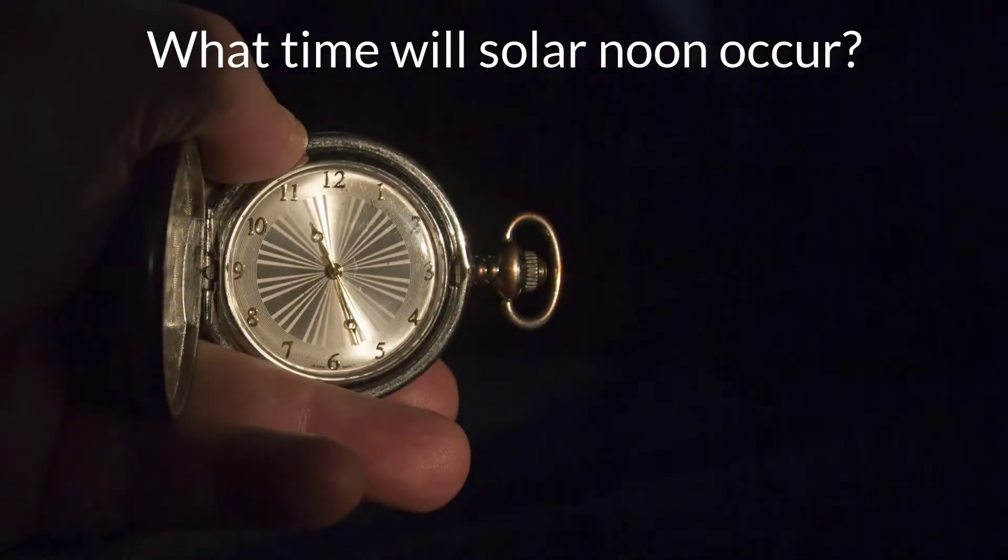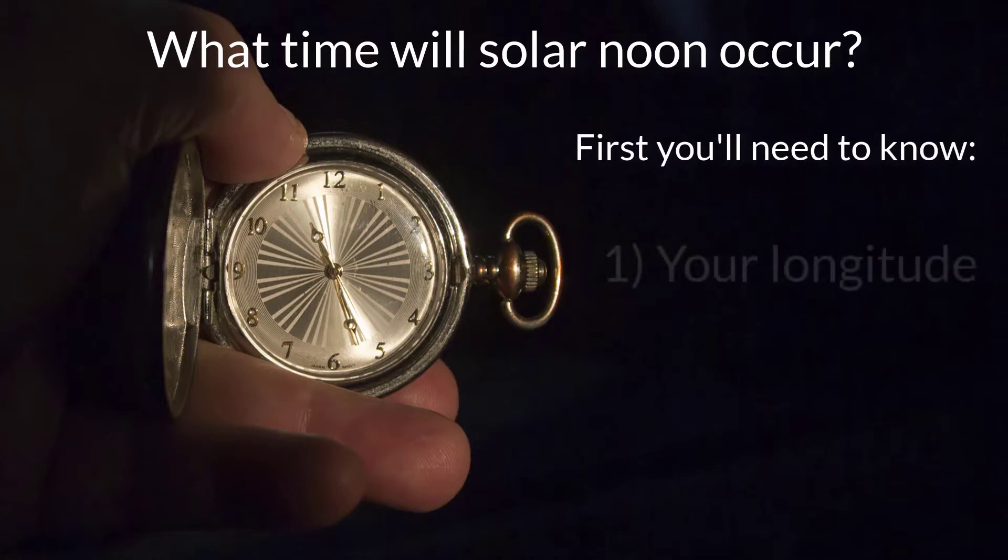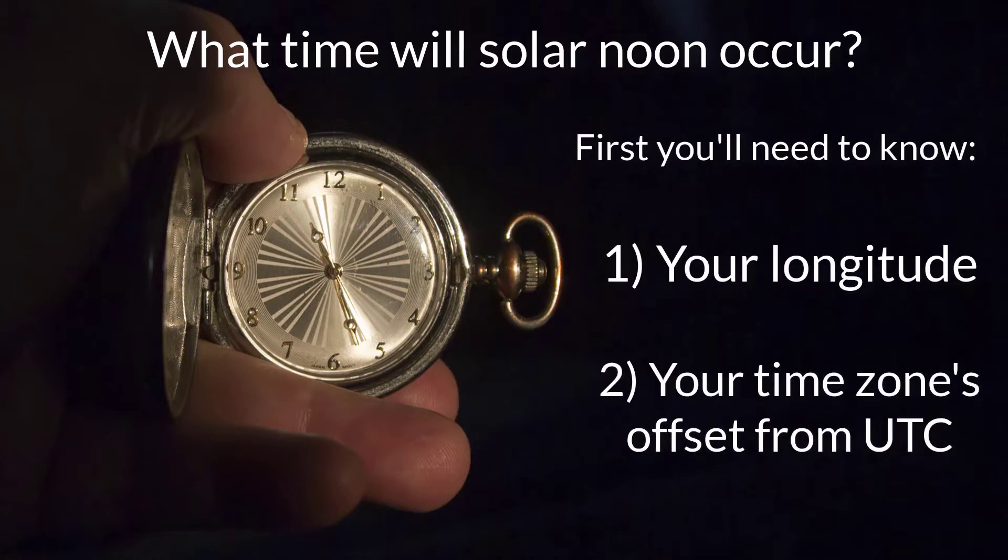Determining the civil time that solar noon will occur will require knowing one, your local longitude, and two, your local standard time zone's offset from UTC.